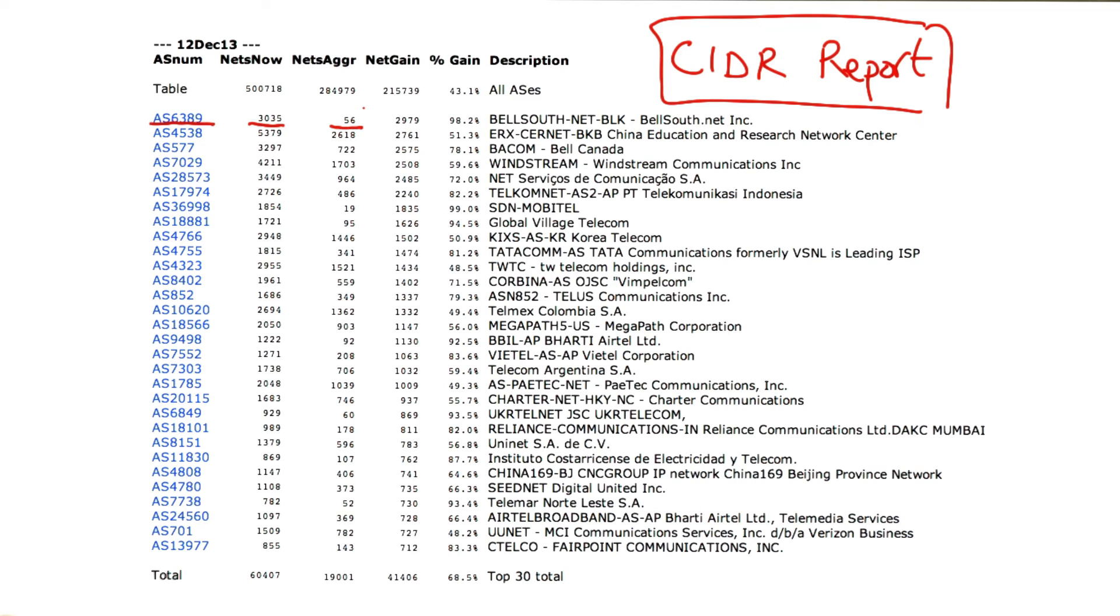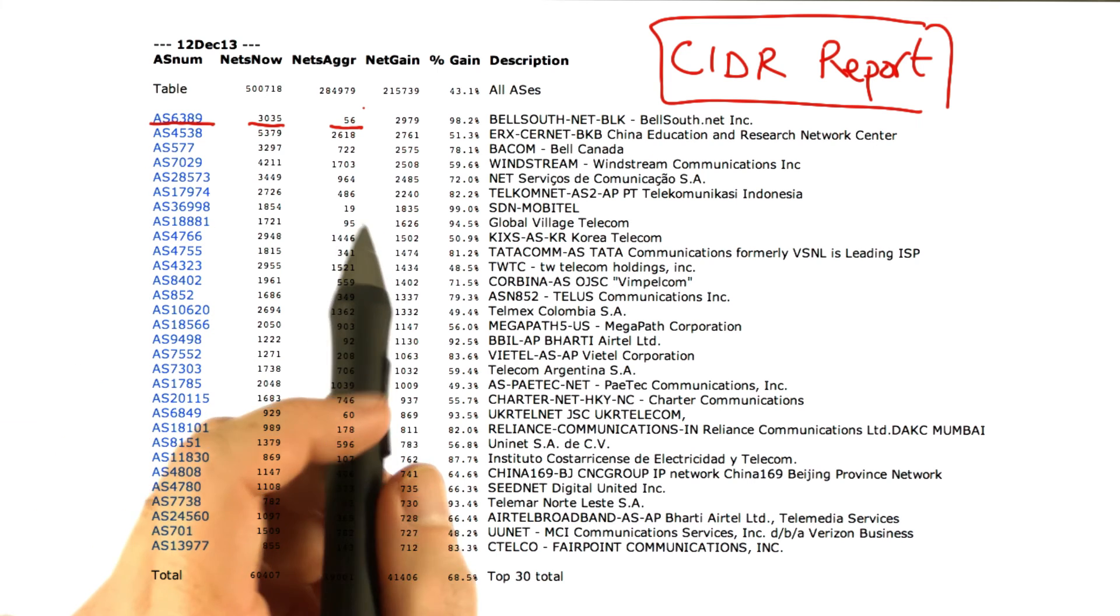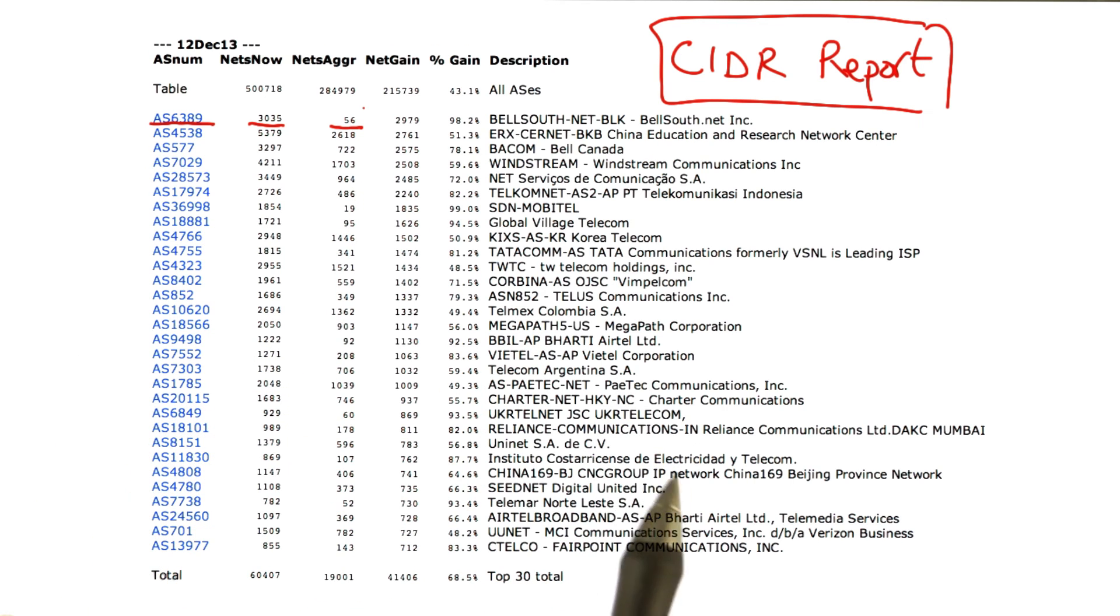With appropriate aggregation, this autonomous system could instead advertise only 56 unique IP prefixes. Now this might be overly optimistic. As we just explored, there are perfectly good reasons to de-aggregate a contiguous IP prefix into multiple smaller contiguous IP prefixes. But nonetheless, the report shows that there are probably a lot more IP prefixes in the global internet routing table than there could be if ASs took full advantage of aggregation.